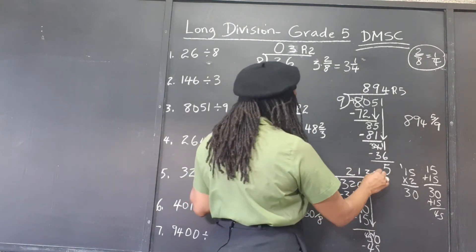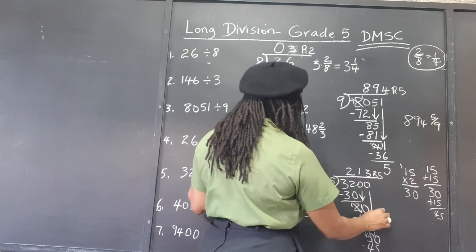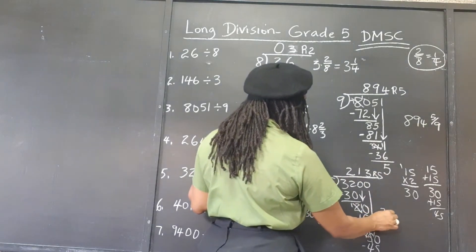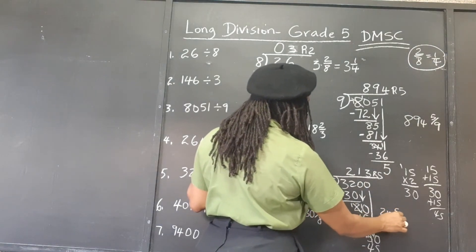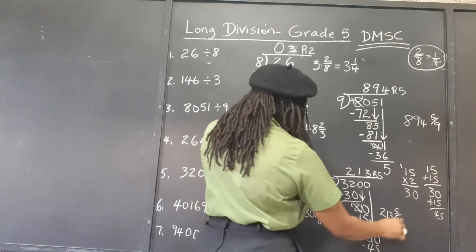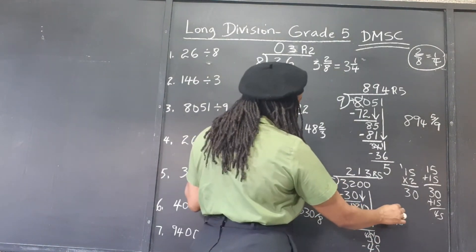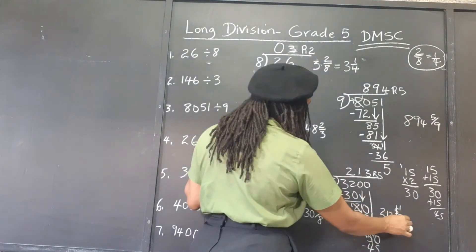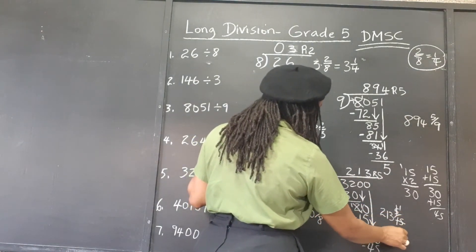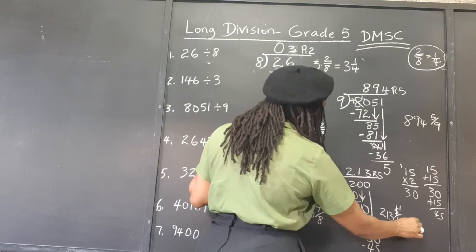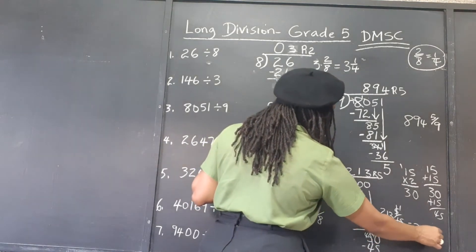We can write the answer as 213 remainder 5, or as 213 and 5 over 15, which reduces to one third — so 213 and one third.